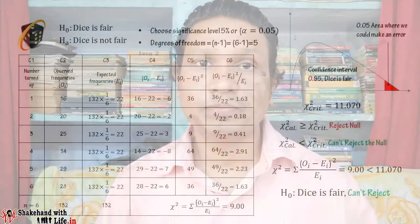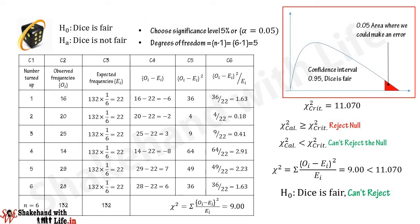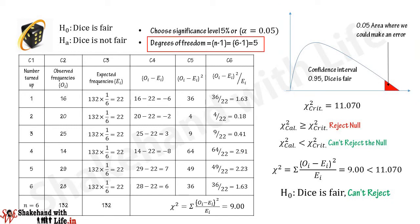Now choose the significance level at 5%, or alpha equal to 0.05. This implies we are 95% confident to say that the dice is fair, but we have a 5% chance that we could make an error in saying the dice is fair. The second thing we consider is the degrees of freedom.